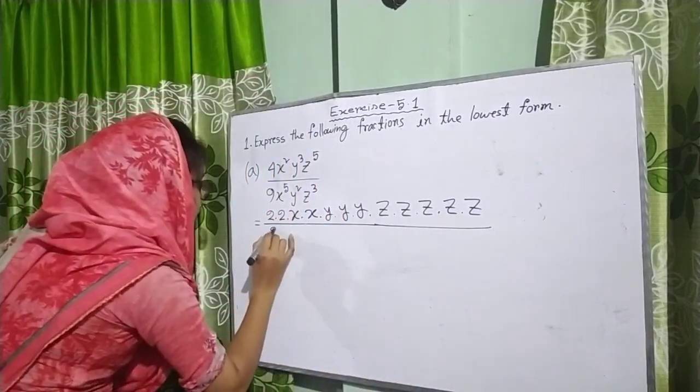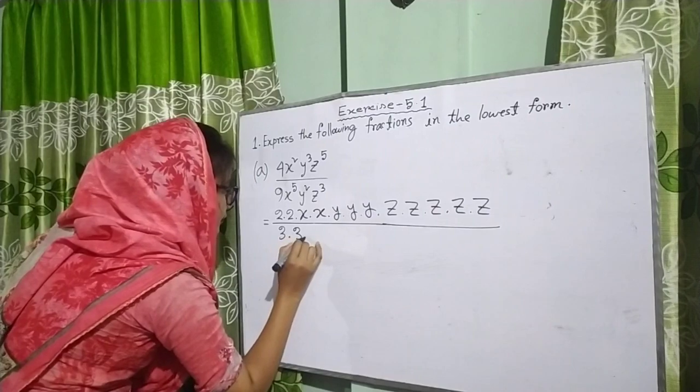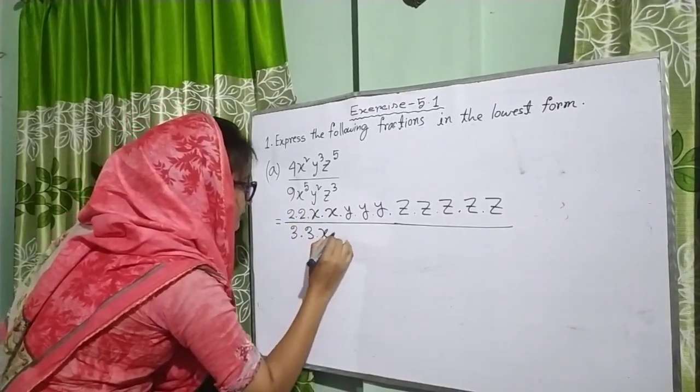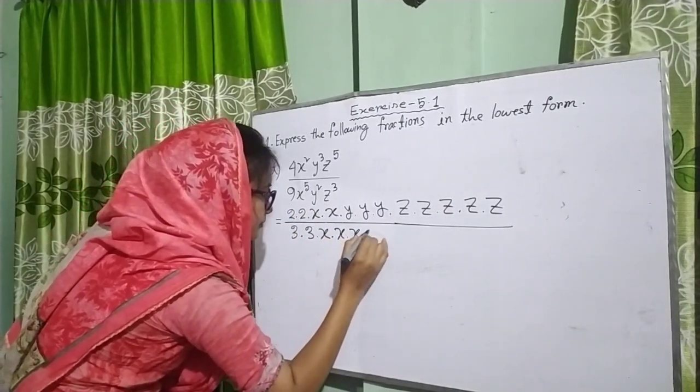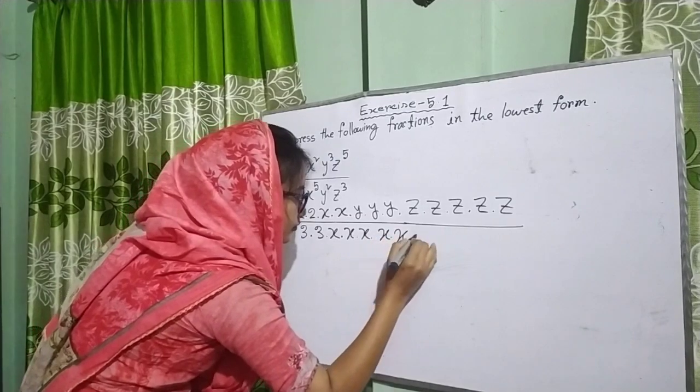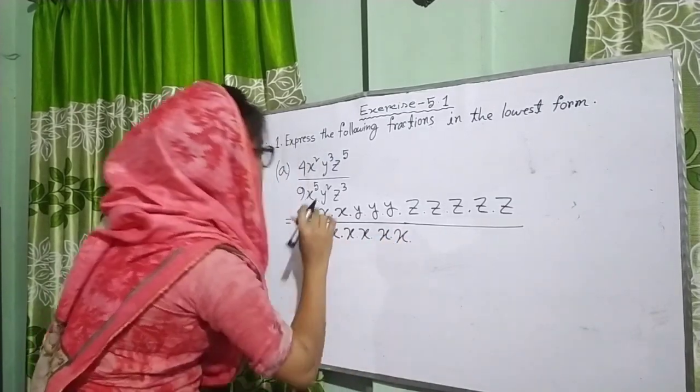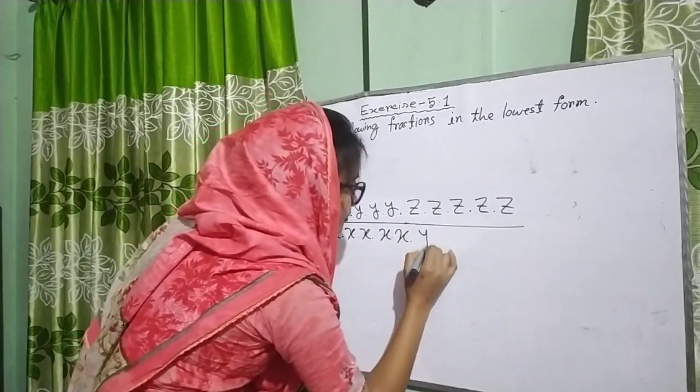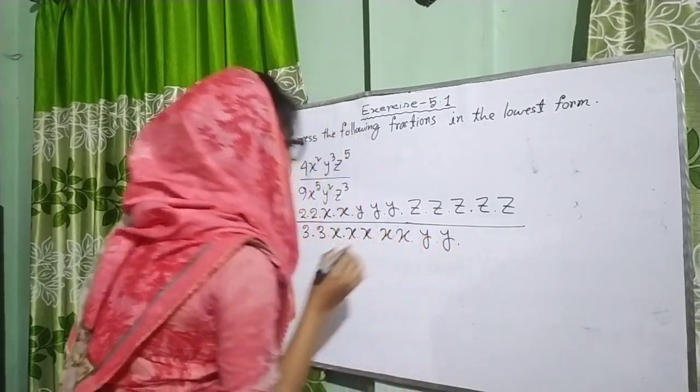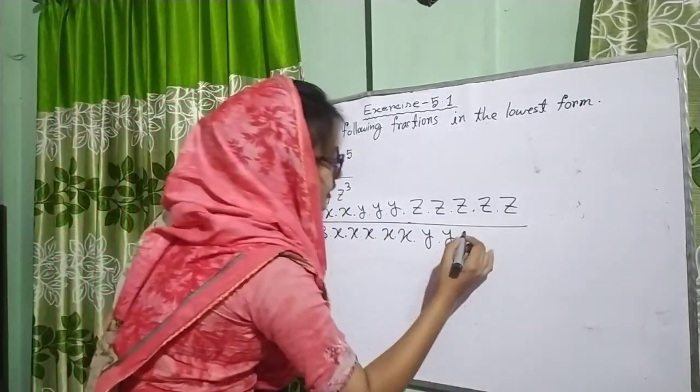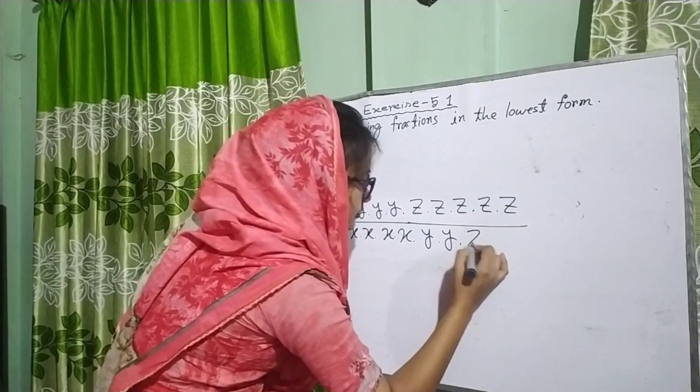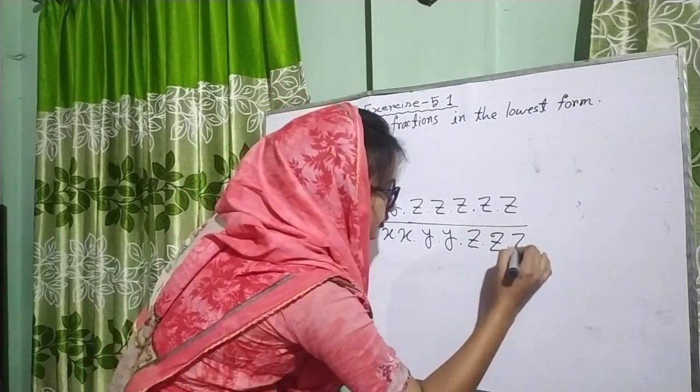Now 9 equals 3 × 3. x to the power 5 means x is 5 times. y squared means y is 2 times, and z cubed means z is multiplied 3 times.